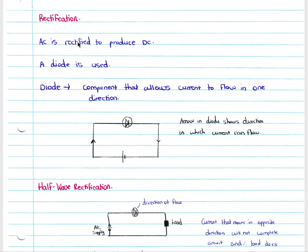Lastly we look at rectification, which is where we use diodes. AC is rectified to produce DC. A diode is used, and we must know that the diode is a component that allows current to flow in one direction only. In a setup where we have a power source, our diode will only allow current to move in the direction of the arrow.